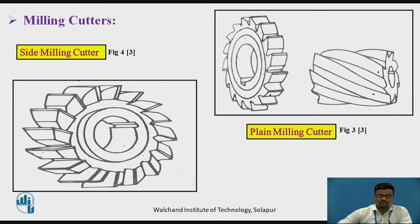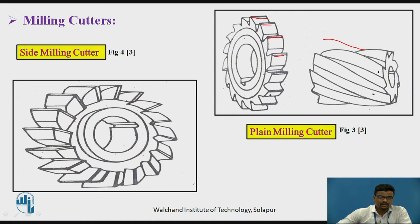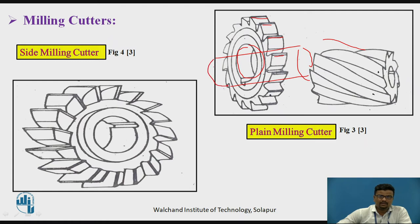The first type is the plain milling cutter. You can see that the cutting teeth are at the periphery only. In the case of a helical milling cutter, a helix angle of maybe 15 to 30 degrees is provided. The facing operation can be performed with this plain milling cutter, which is fixed in the arbor using keyways.